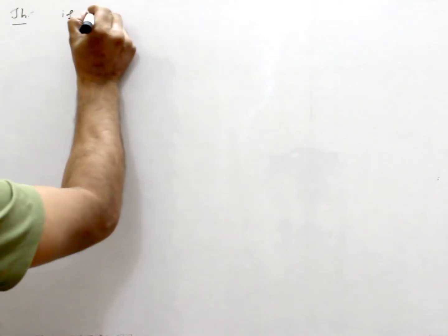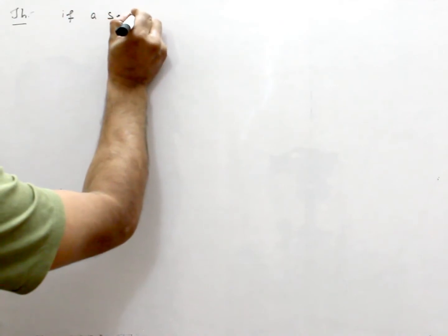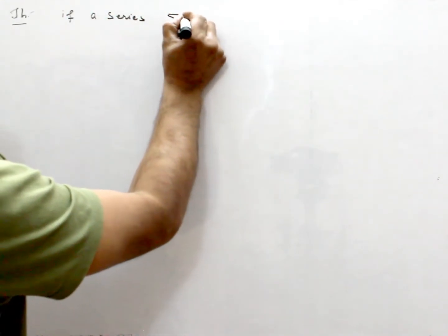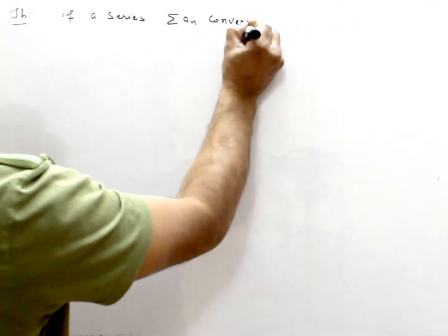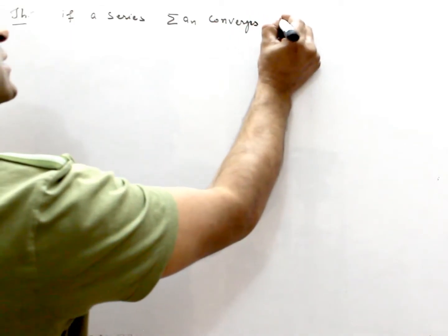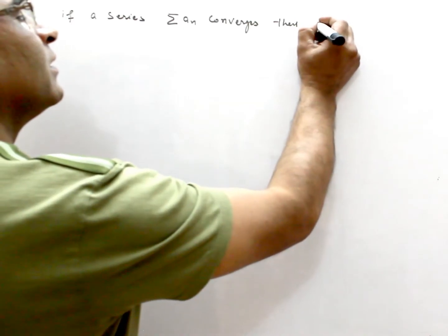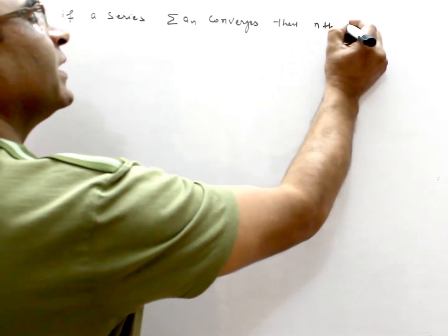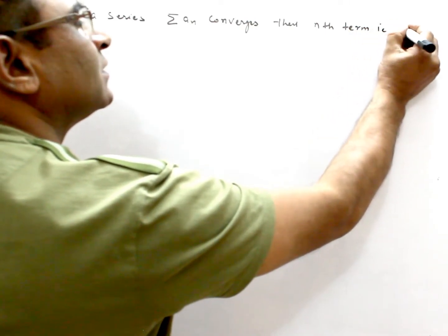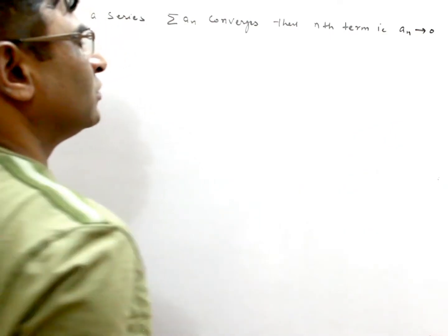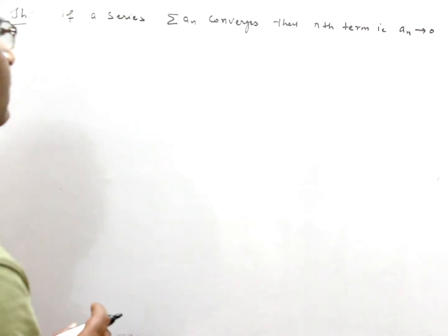If a series AN converges, then the nth term, that is AN, converges to zero.